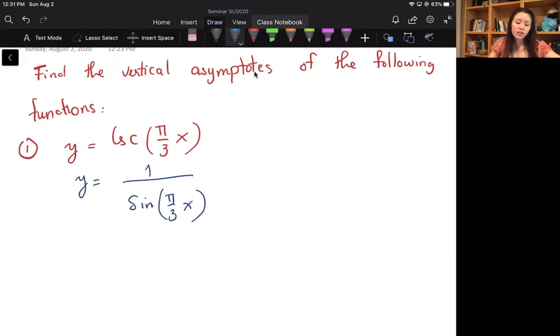So this function has vertical asymptotes whenever it's undefined, and it's undefined when the bottom is equal to zero. So sine of π over 3x is equal to zero.